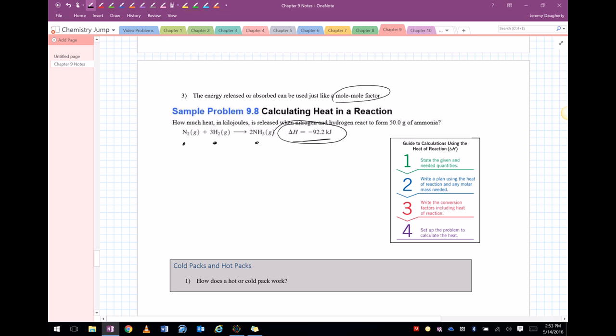So we can write three conversion factors here. It will release 92.2 kilojoules for every one mole of nitrogen that we use, or it will release 92.2 kilojoules for every three moles of hydrogen that we use, or it will give off 92.2 kilojoules for every two moles of ammonia.